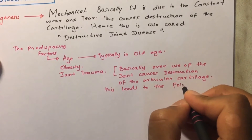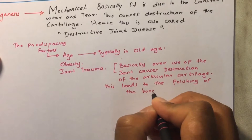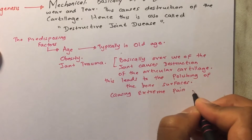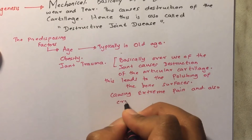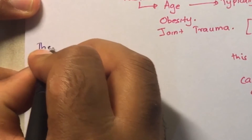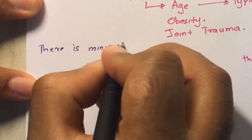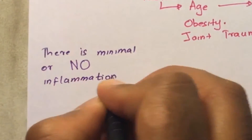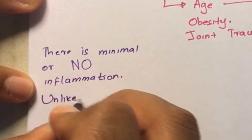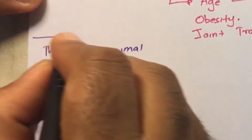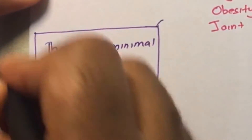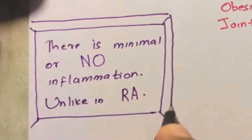This destruction decreases the joint space between the two articular surfaces, leading to polishing of the bone surfaces, which causes extreme pain and crepitations. In osteoarthritis we see minimal or no inflammation — this is a chronic wear and tear process, unlike rheumatoid arthritis where the baseline problem is inflammation. It is either a monoarticular or oligoarticular disease with an asymmetric distribution.